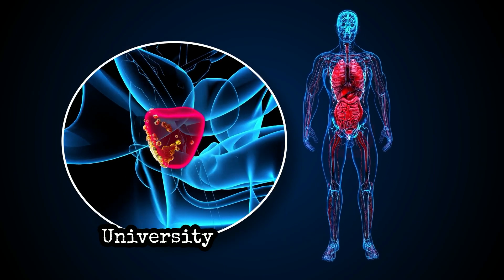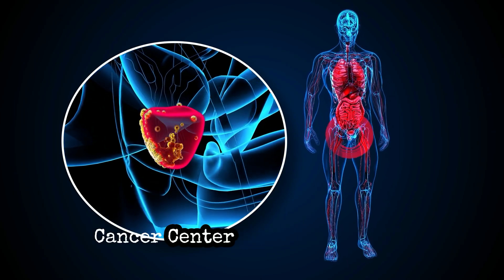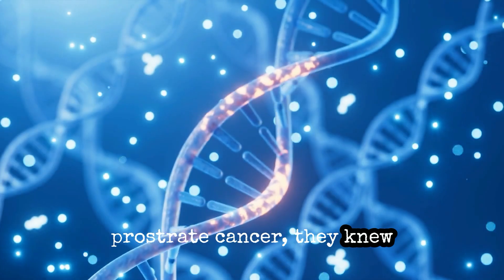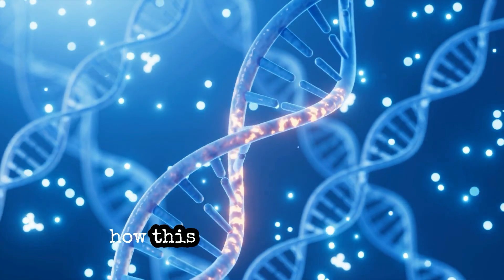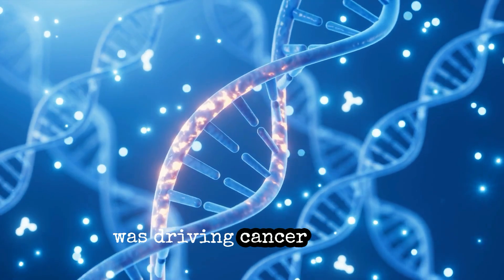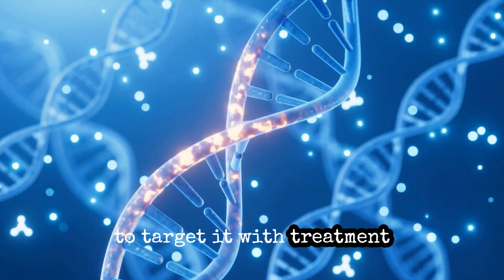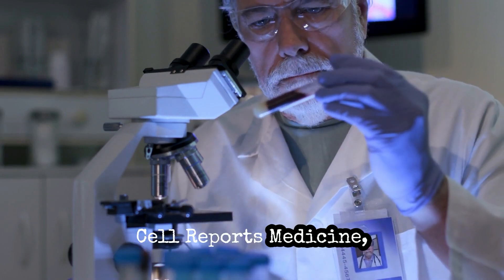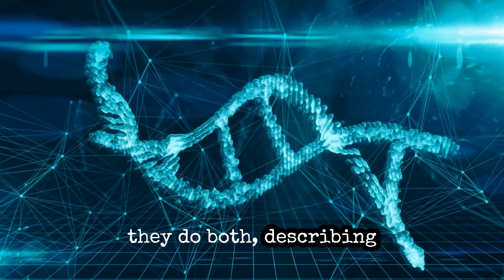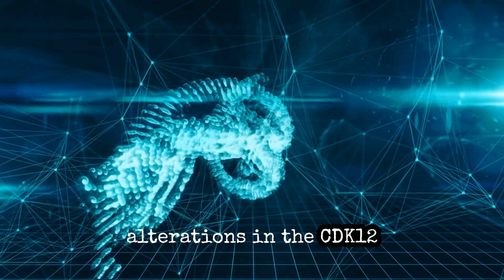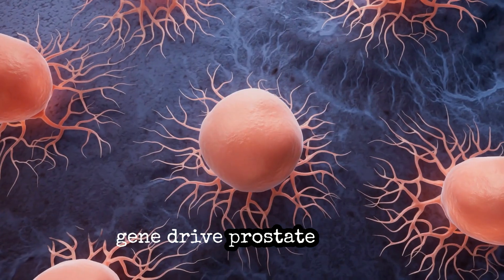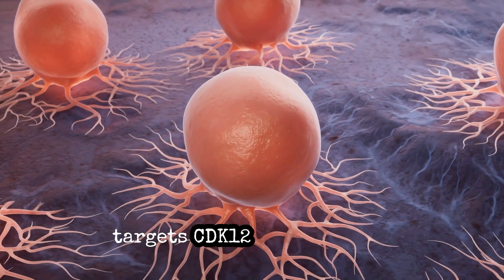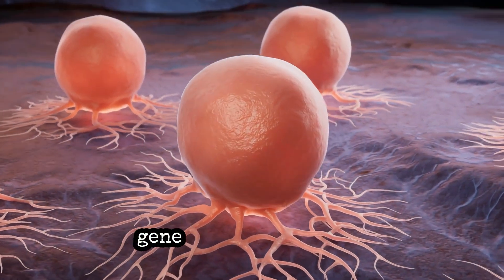After scientists at the University of Michigan Rogel Cancer Center first discovered a new subtype of aggressive prostate cancer, they knew they needed to understand how this genetic alteration was driving cancer and how to target it with treatment. In two new research articles published in the journal Cell Reports Medicine, they describe the mechanisms of how alterations in the CDK12 gene drive prostate cancer development and report on a promising degrader that targets CDK12 and a related gene to destroy tumors.